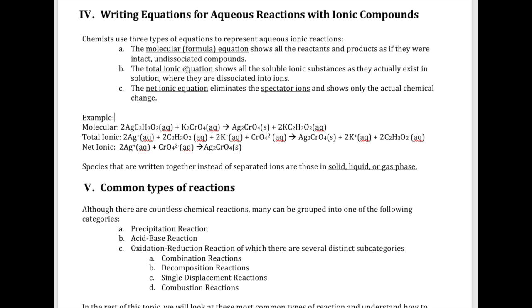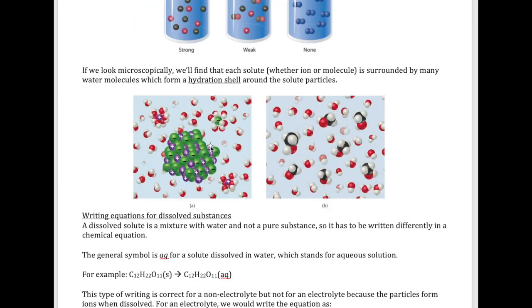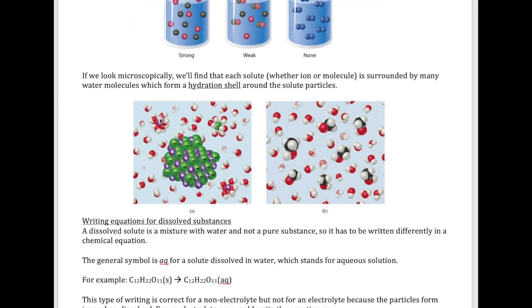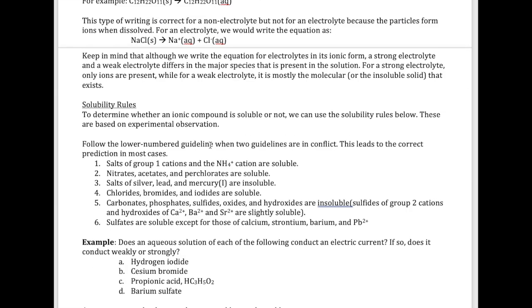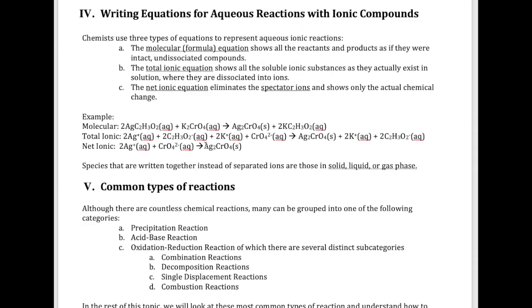The total ionic equation is an equation where you separate out all the ionic substances that are in solution. In other words, everything with an aqueous next to them has to be separated into positive and negative ions. Why? Because as we discussed in a prior video, the real picture of these ionic compounds when they're dissolved in water is they are existing as cations and anions surrounded by water.